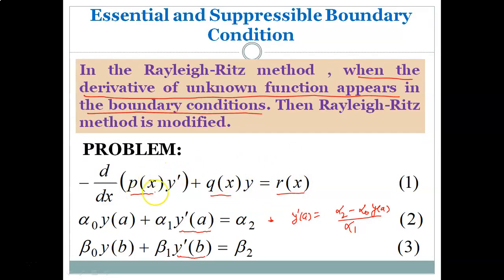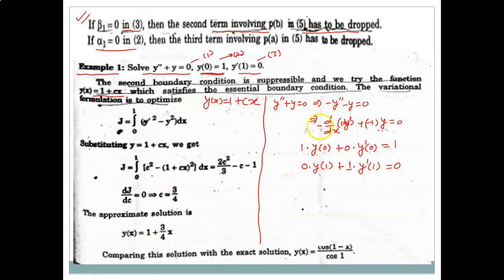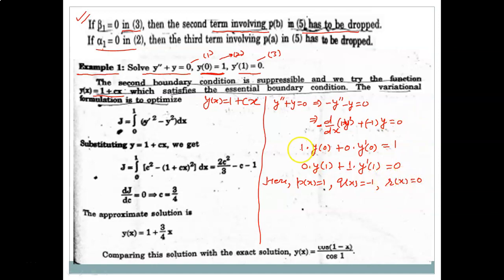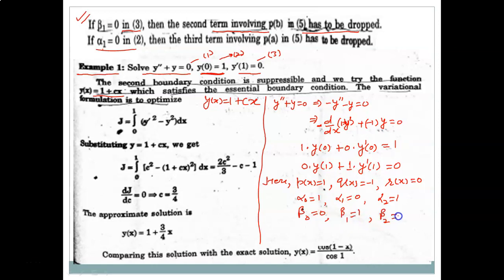Comparing with the standard form, we identify the values: p(x) = 1, q(x) = -1, r(x) = 0. For the boundary conditions: α₀ = 1, α₁ = 0, α₂ = 1; and β₀ = 0, β₁ = 1, β₂ = 0.